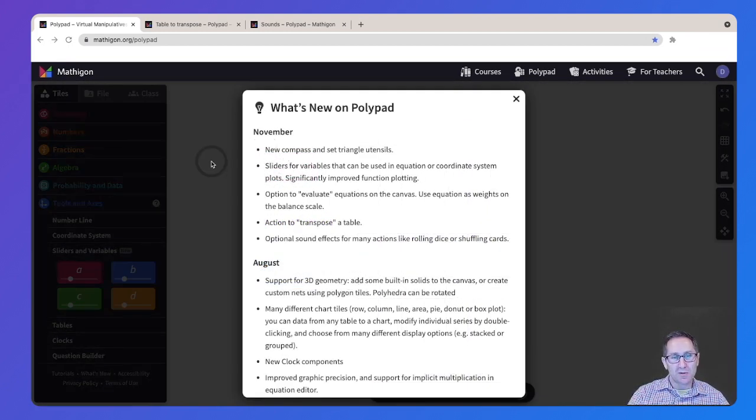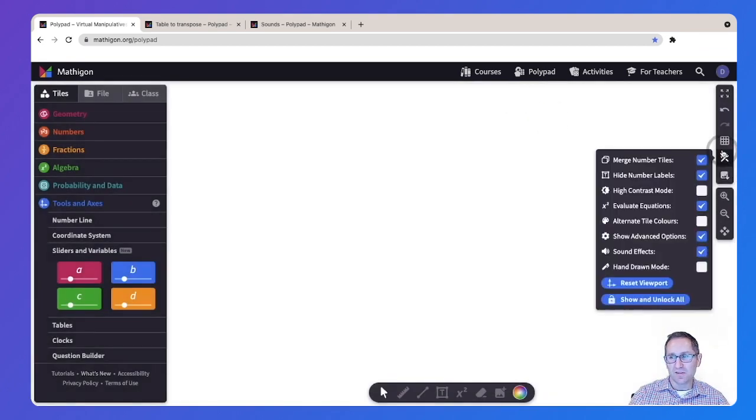So we've seen the new compass and set triangle utensils. We've seen the sliders for variables. Let's explore the new option to evaluate equations on the canvas. All right. So the first thing I want to show you under settings is there's this new option called evaluate equations, which you can turn on and off.